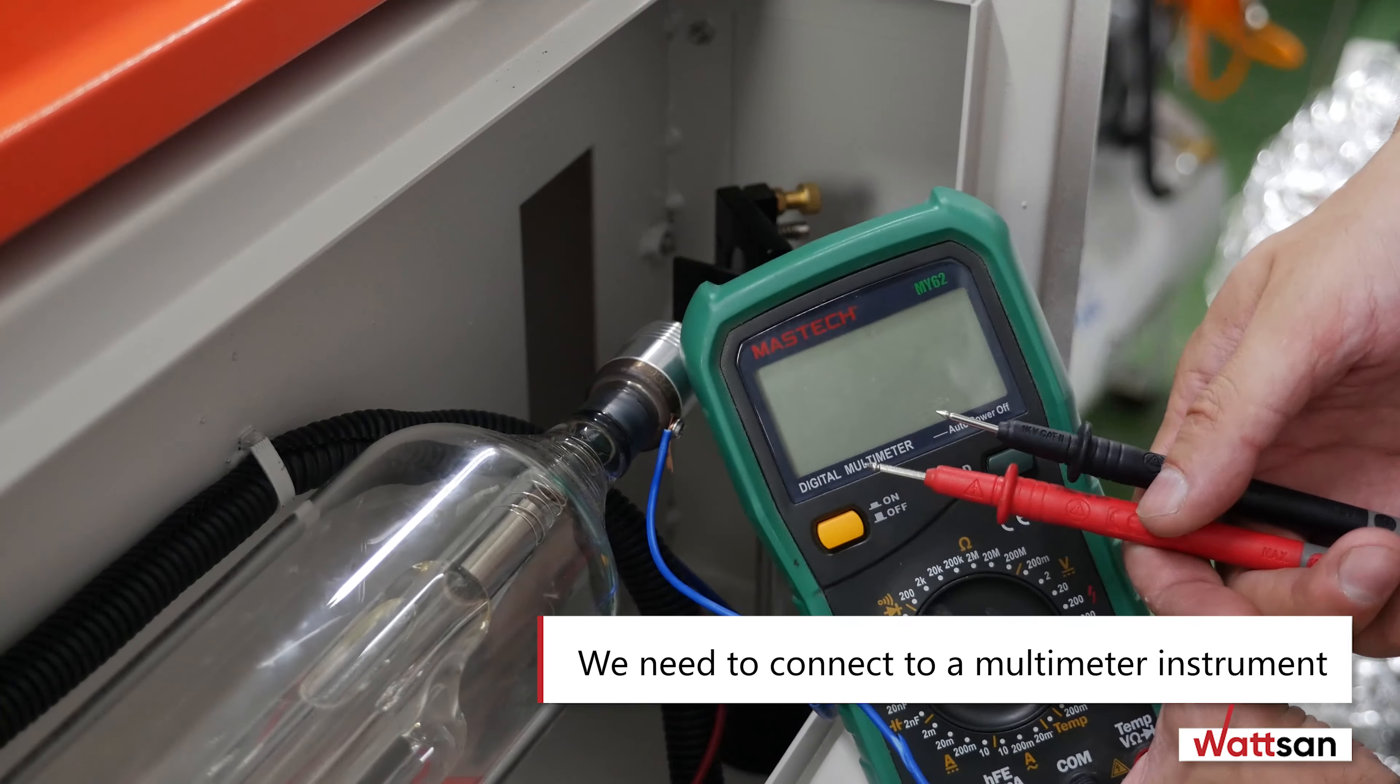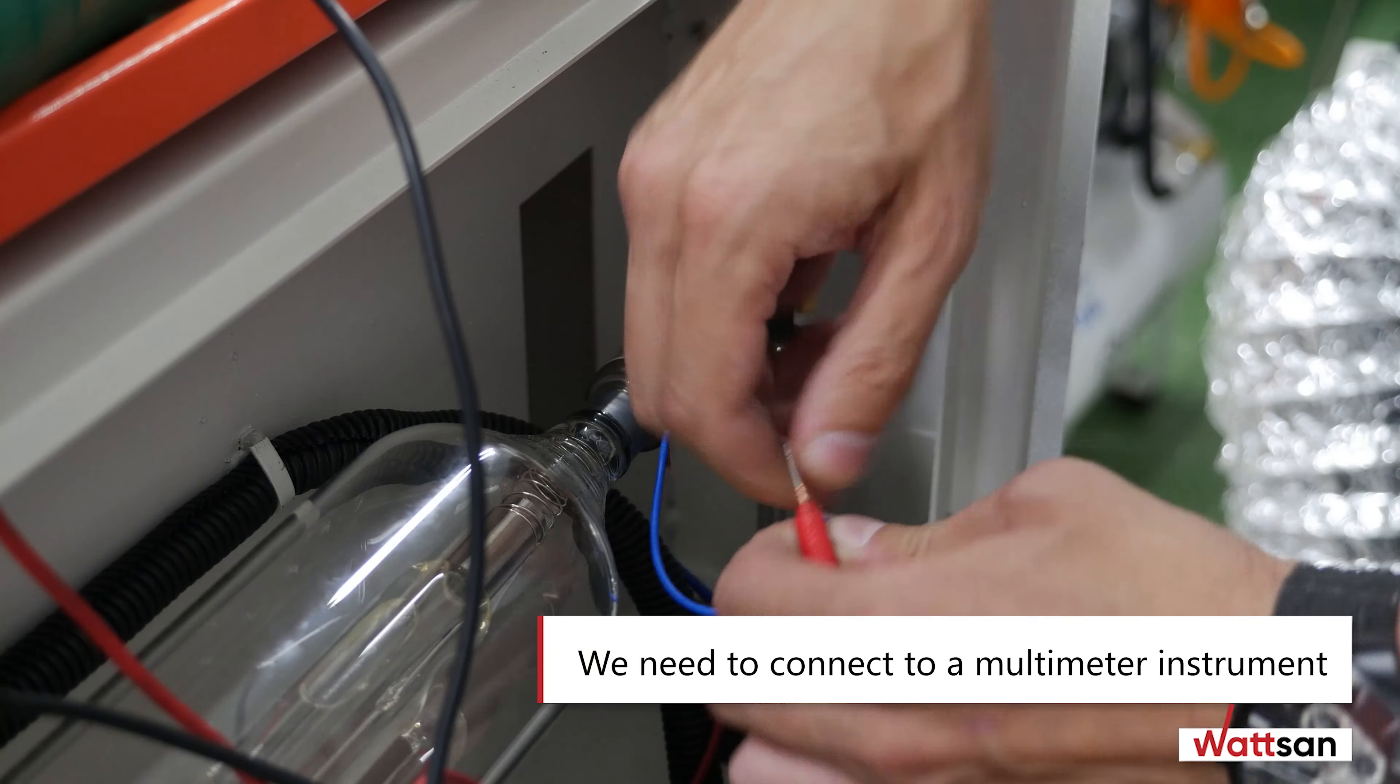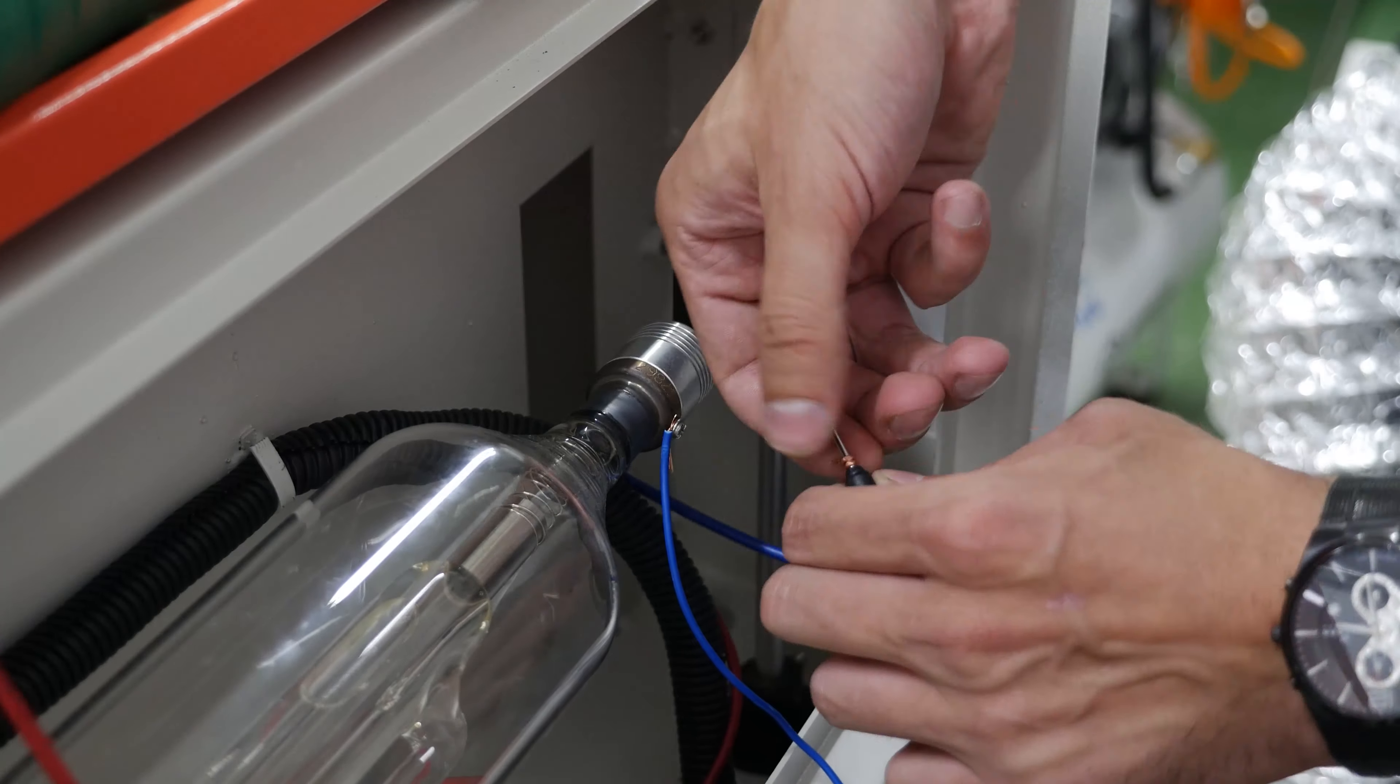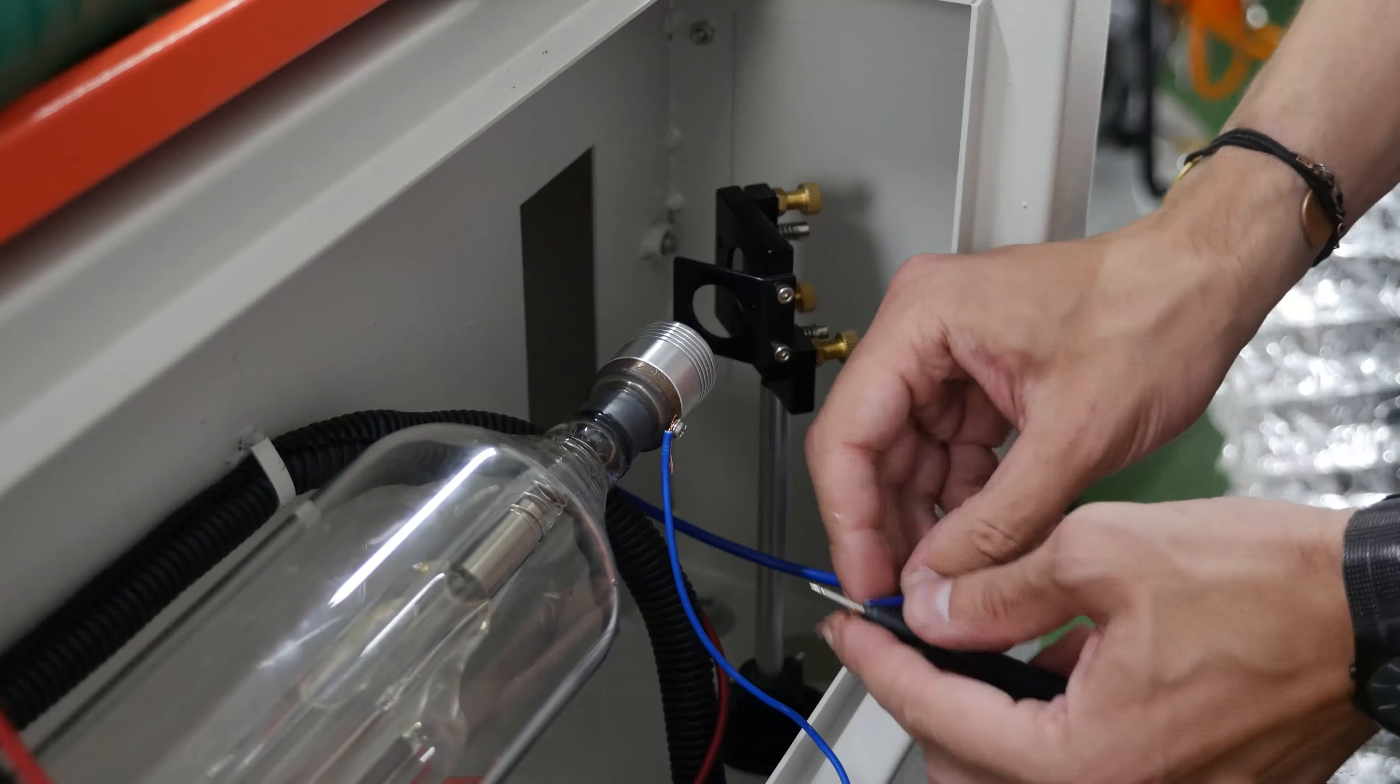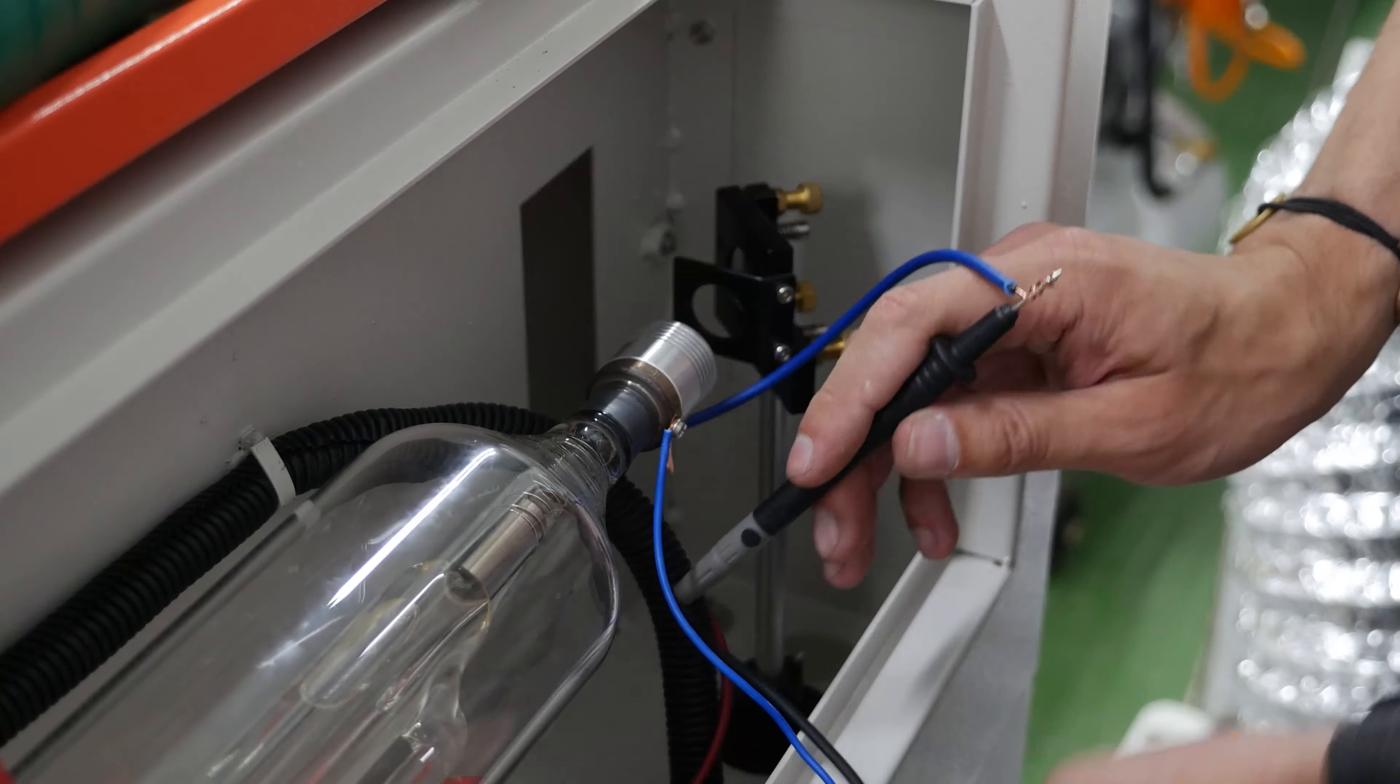To adjust the maximum current you need to unscrew the wire from the cathode of the laser tube. Take a small piece of wire with similar cross section and screw it to the cathode of the laser tube. Now we have two wires that we need to connect to a multimeter instrument to measure the current being fed to the laser tube.